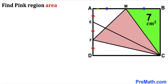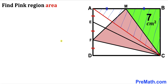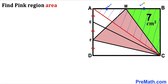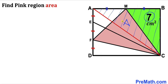We draw diagonal AC of rectangle ABCD connecting vertex A to vertex C. Focusing on the right half — triangle ABC — we observe that AM equals BM, so both triangles sharing those bases have the same height. Therefore the area of triangle AMC equals the area of triangle MBC. Since triangle MBC is 7 cm², triangle AMC is also 7 cm².